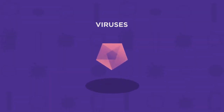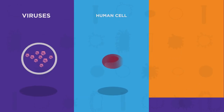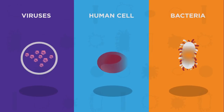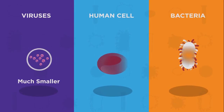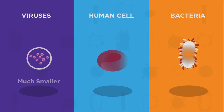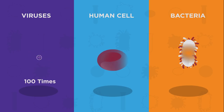In this video we're going to look at what viruses are. Viruses are a type of microorganism. They are too small to be seen by the naked eye, much smaller than bacteria and about a hundred times smaller than human cells.